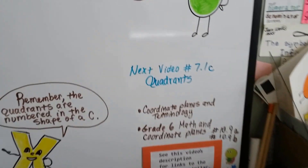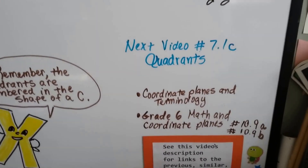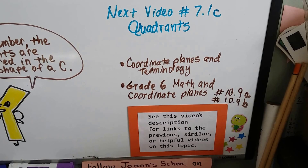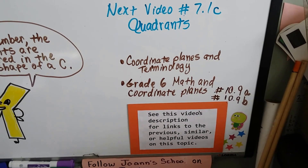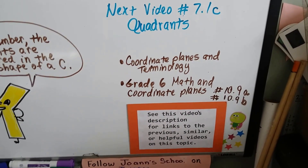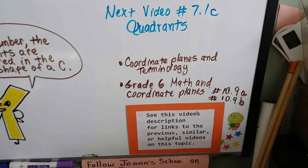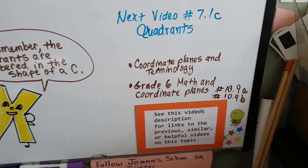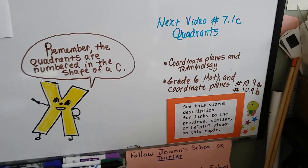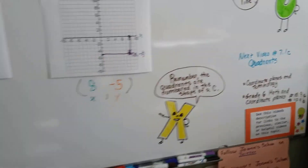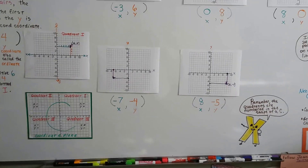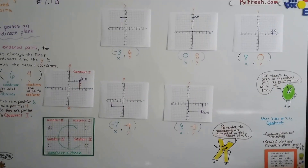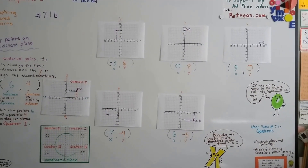Our next video is going to be more about the quadrants. If you want a link to the coordinate planes and the terminology from our last video, that'll be in the description, along with a link to the grade 6 math about coordinate planes — might be a little different, but a lot of the same information. I hope this was helpful, and I hope you now know how to plot points. We're going to continue on and talk about quadrants.